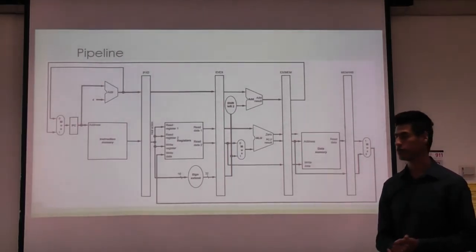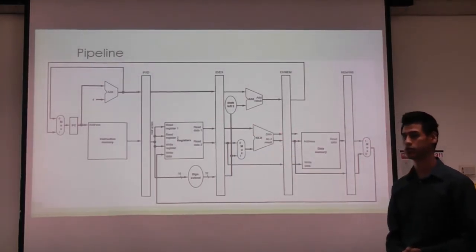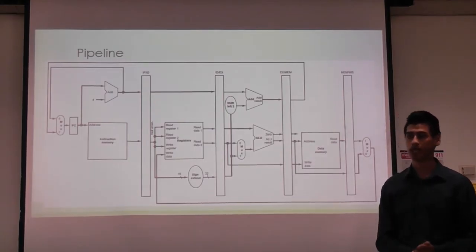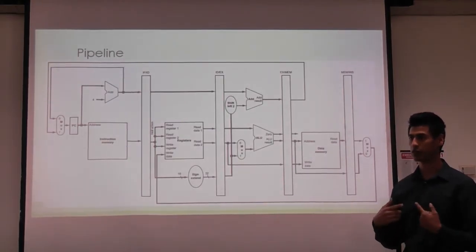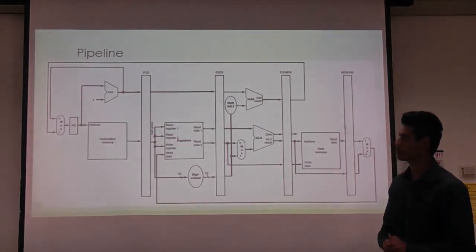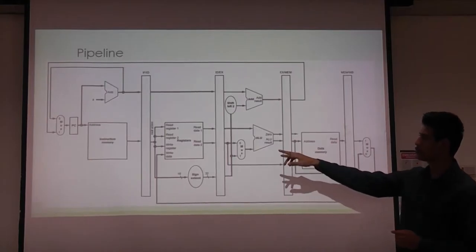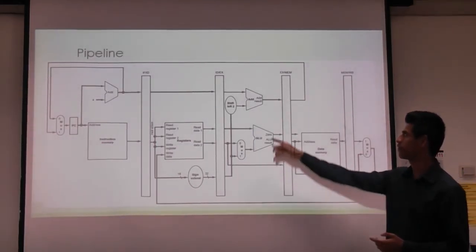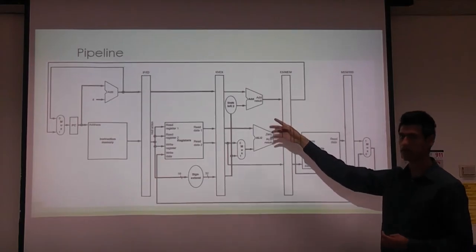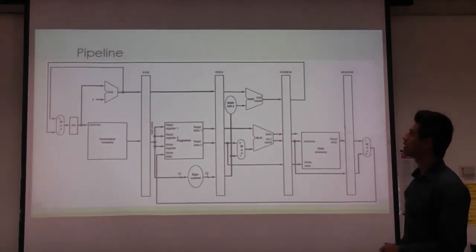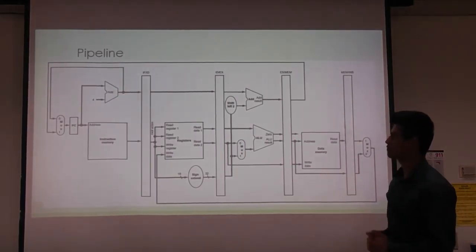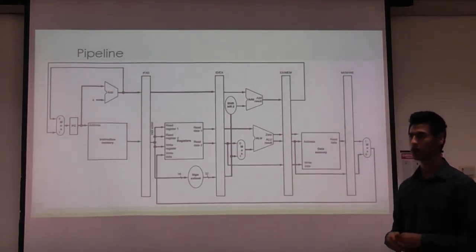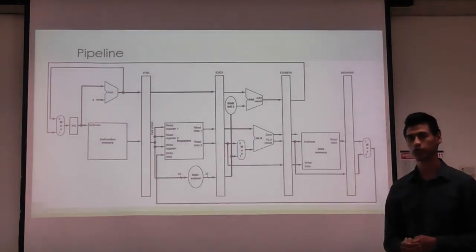Some major changes for pipelining include adding an extra adder to calculate the effective address for jumps and branches, so we can compute the jump target while simultaneously comparing the two registers to determine whether to branch. We also modified the instruction register by removing the branch and jump effective address computation, pulling those signals from the execute stage instead.